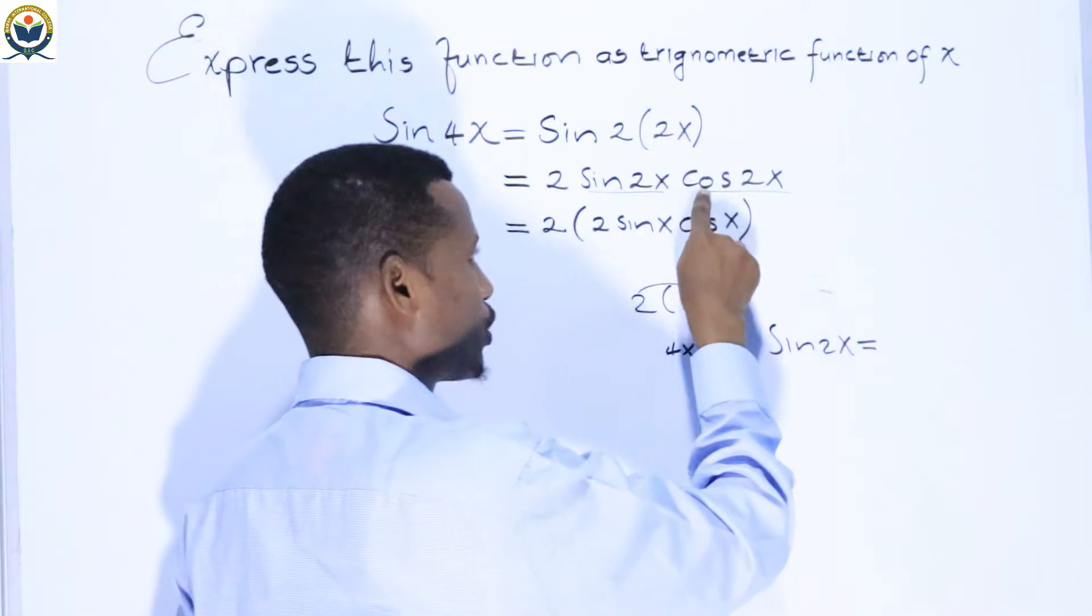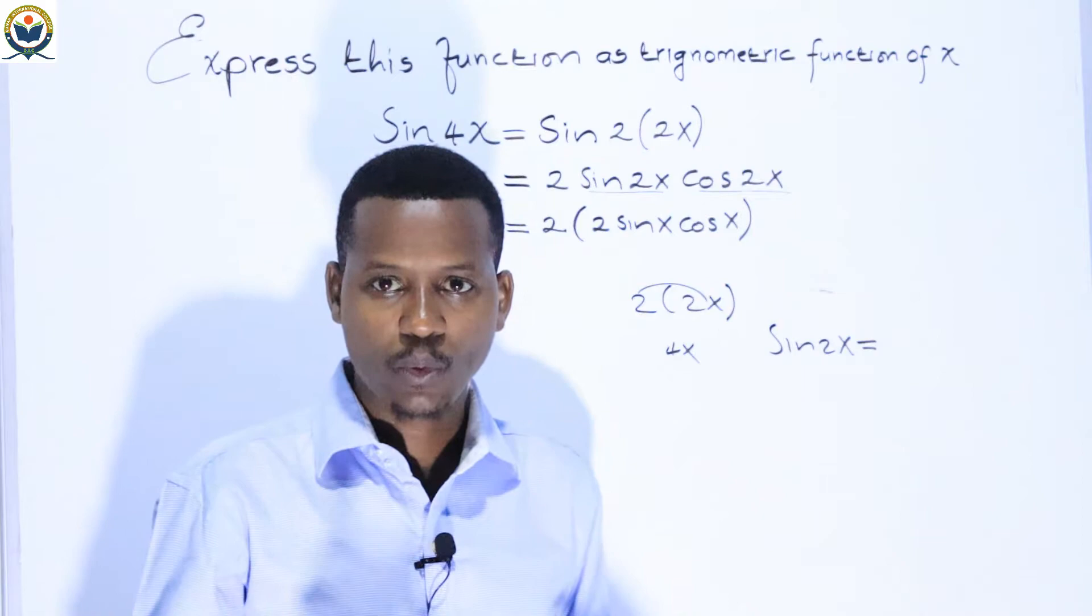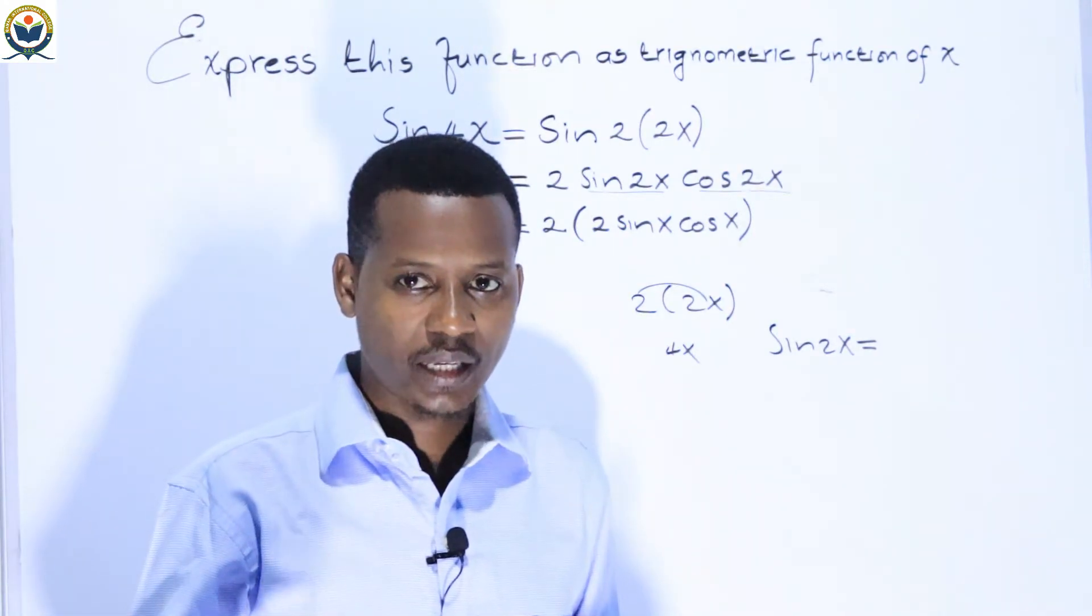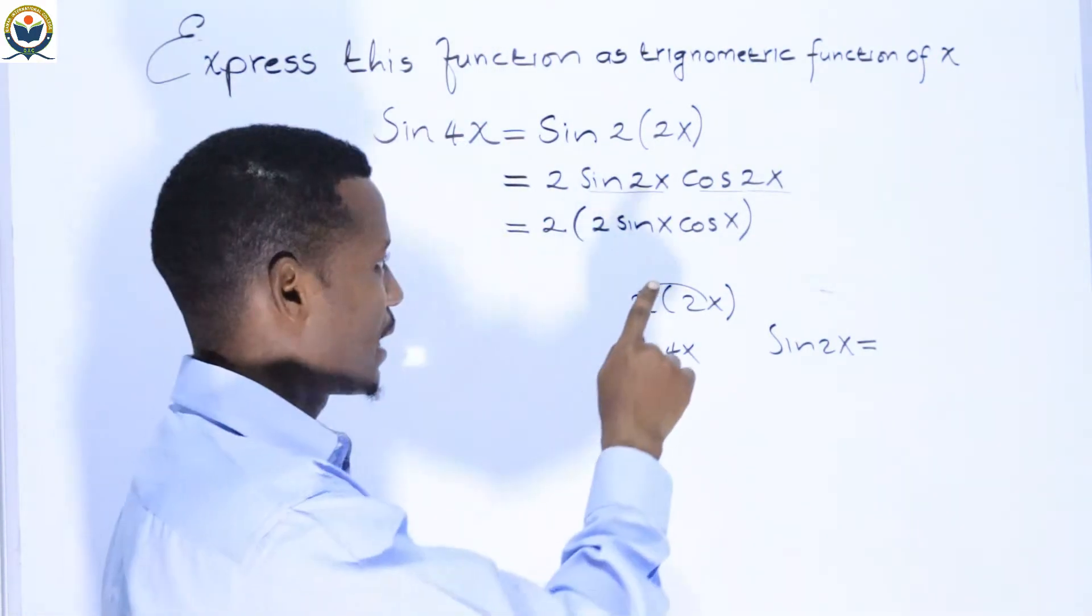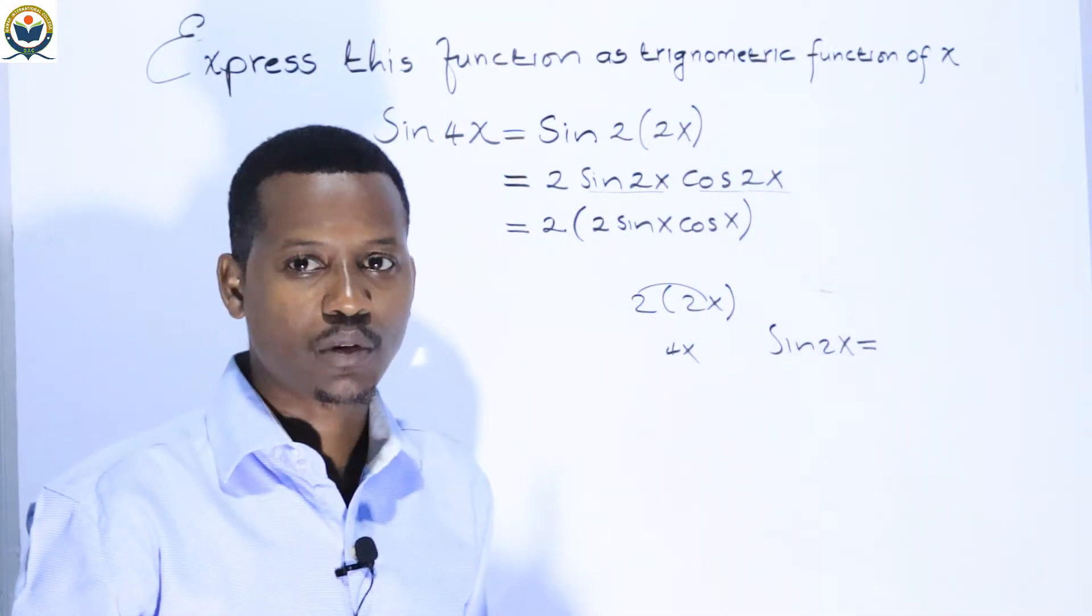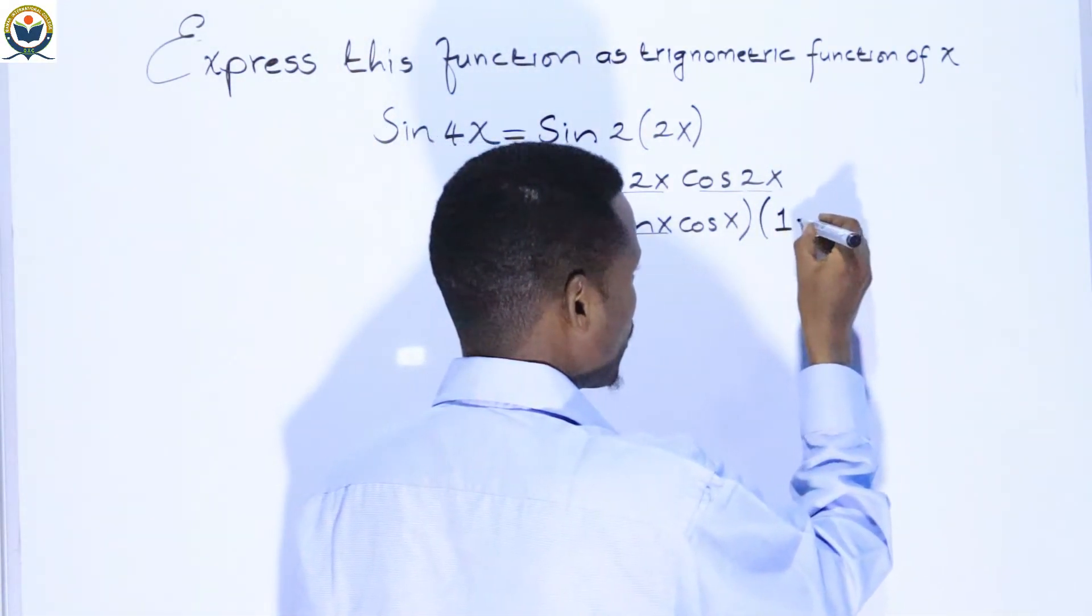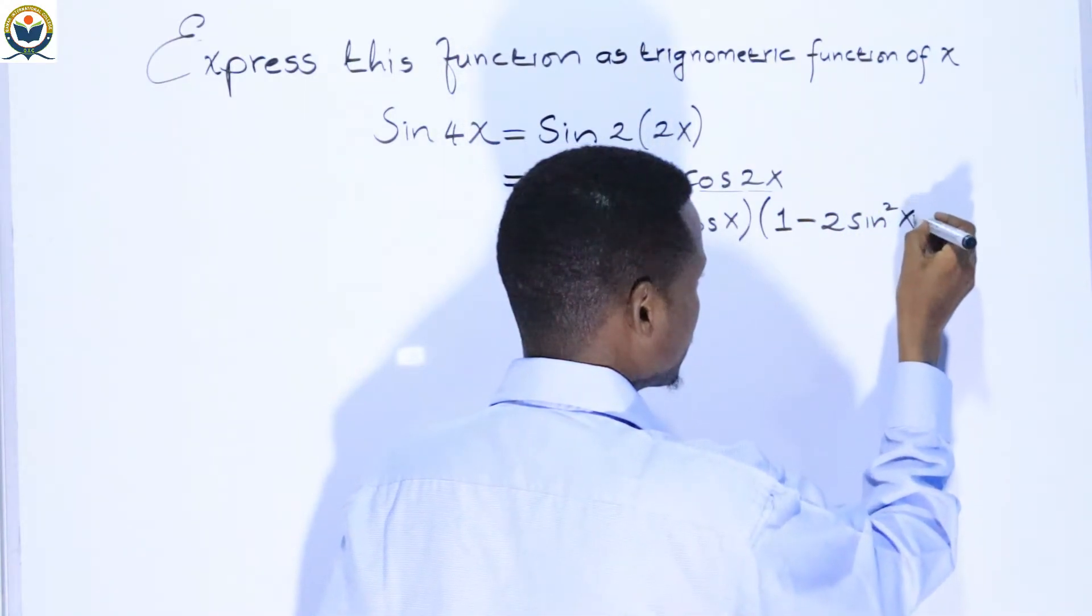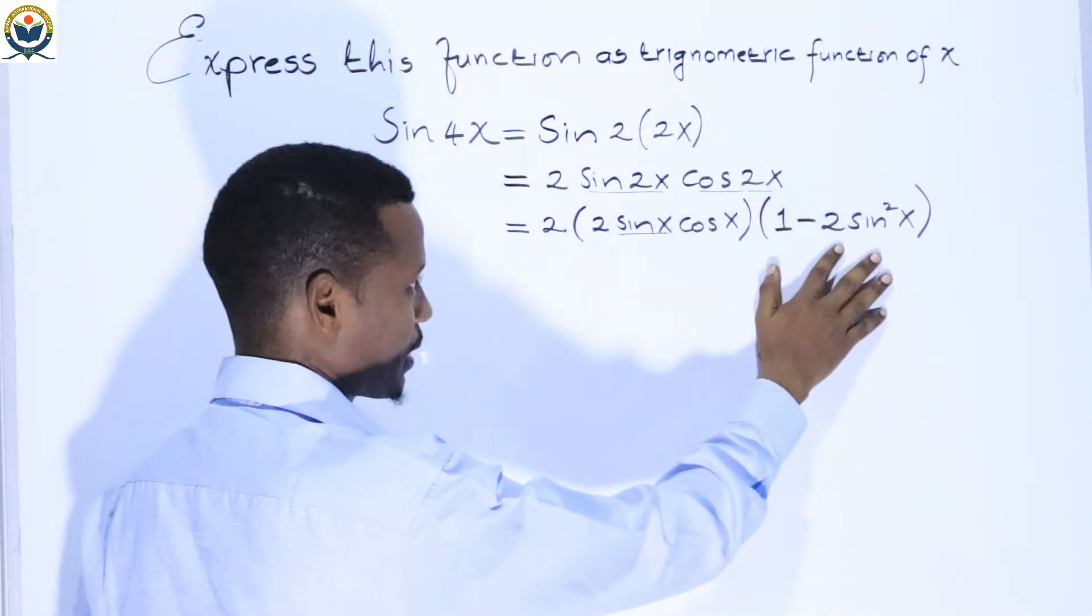Cos of double angle has three formulas: one in terms of sin and cos together, one in terms of sin squared only, one in terms of cos squared only. We'll use the formula: 1 minus 2sin²(x). So we open the brackets.